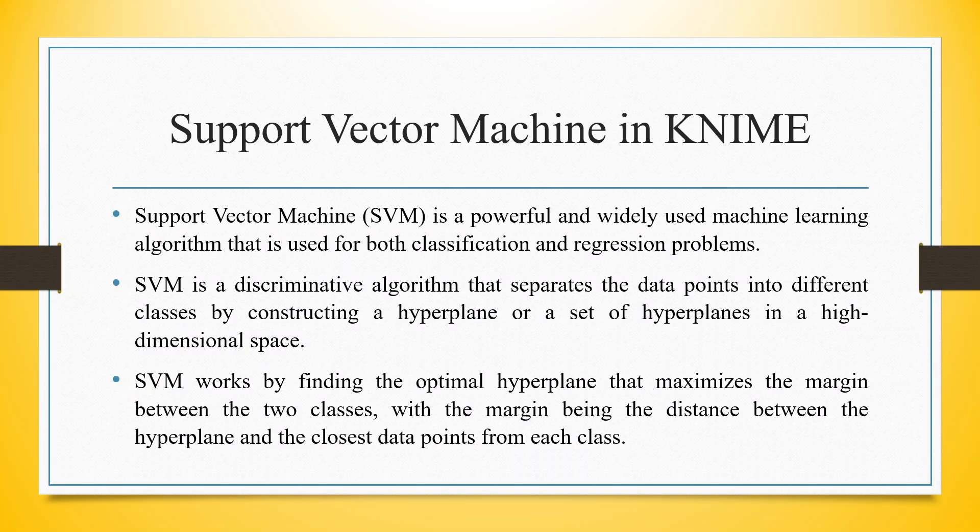SVM is a discriminative algorithm that separates data points into different classes by constructing a hyperplane or a set of hyperplanes in a high dimensional space. SVM works by finding the optimal hyperplane that maximizes the margin between the two classes, with the margin being the distance between the hyperplane and the closest data points from each class.